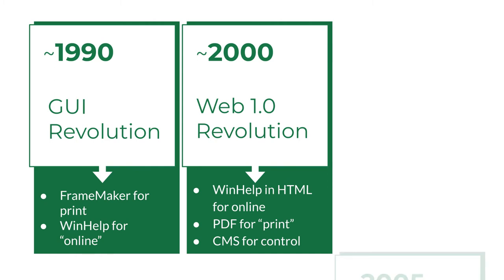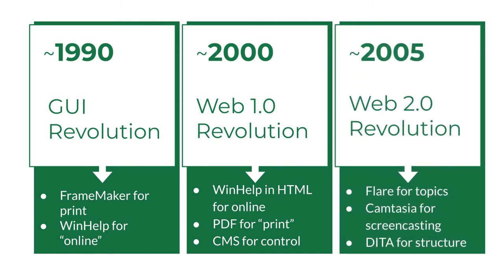Around 2005, the company was firmly embedded in selling software as a service. Tools like MadCap Flare supported writing content as small chunks stored in a database; topics, rather than documents or even pages, became the unit of production for writers. Tools like Camtasia and its sister Snagit allowed tech comm pros to visually demonstrate or illustrate use of the company's software. In addition, standards like DITA became more widespread in an attempt to manage the vast amount of content across the web.